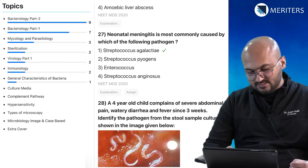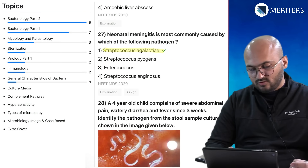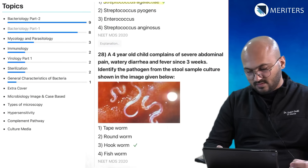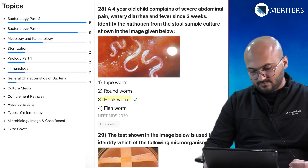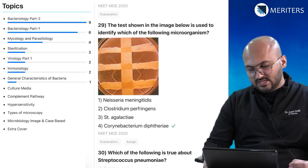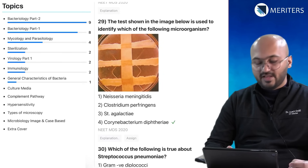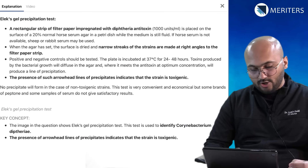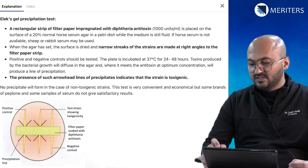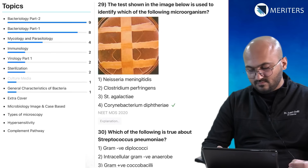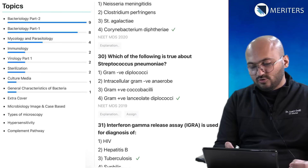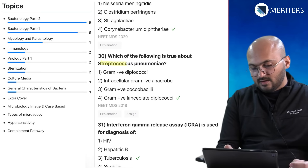Neonatal meningitis is associated with Streptococcus. Hookworms are parasitology. An agar plate identification of the microorganism — Corynebacterium diphtheriae — uses the Elek gel precipitation test. Which of the following is true about Strep pneumoniae — it is gram-positive diplococci. Interferon gamma is used for diagnosis of TB, so that's bacteriology.